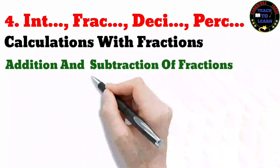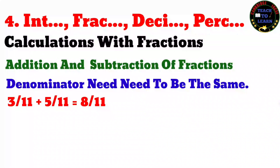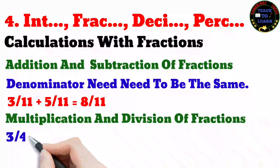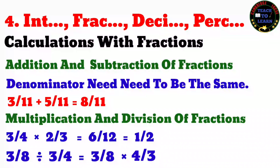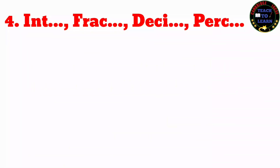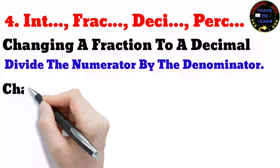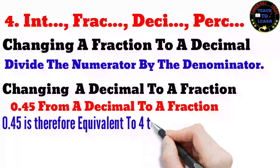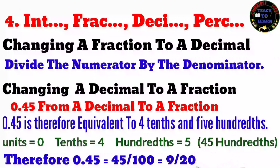For fractions to be added or subtracted, the denominators must be the same. If they are not the same, take the LCM first and make them the same. The reciprocal of a number is obtained when one is divided by that number — the reciprocal of 5 is 1/5, and the reciprocal of 2/5 is 5/2. Dividing one fraction by another gives the same result as multiplying by the reciprocal. To change a fraction to a decimal, divide the numerator by the denominator. To change 0.45 to a fraction: 0.45 = 45/100 = 9/20 in simplest form.